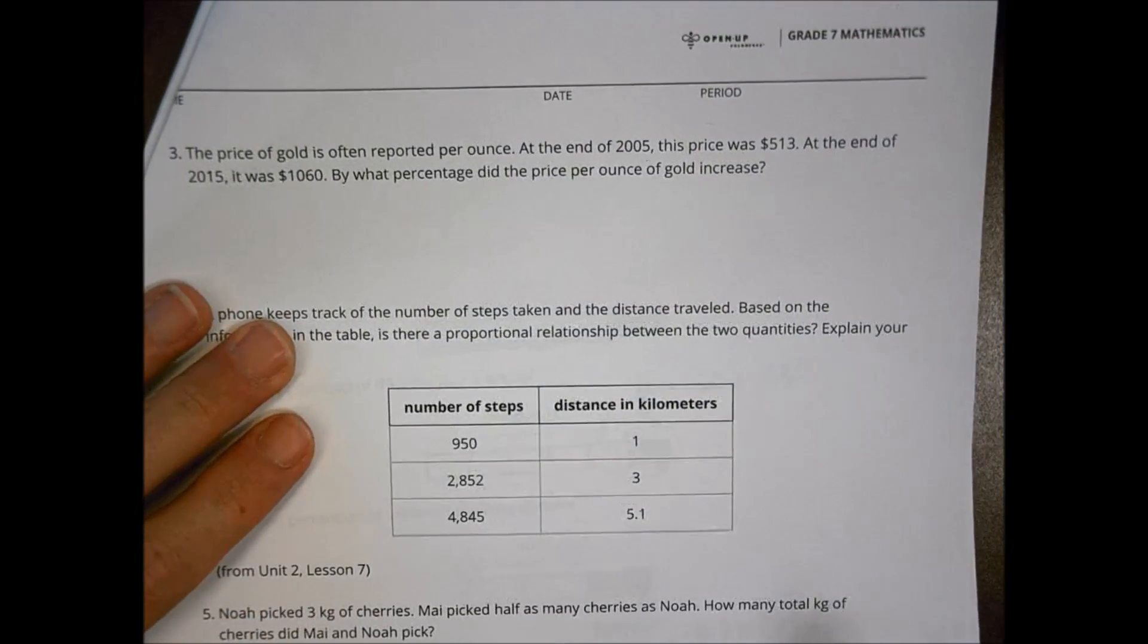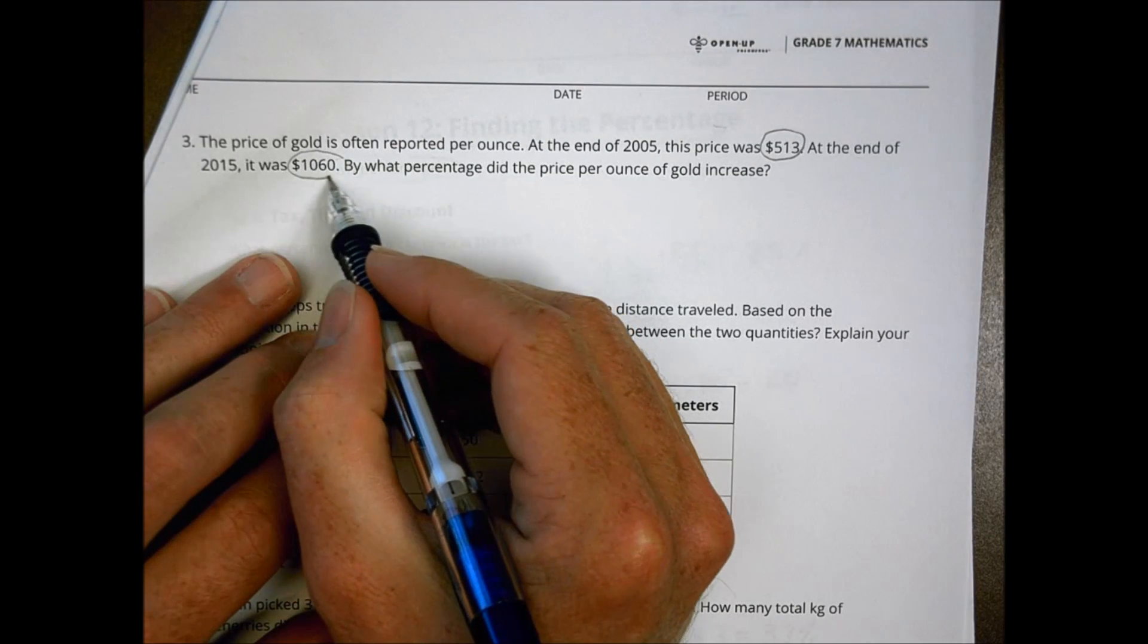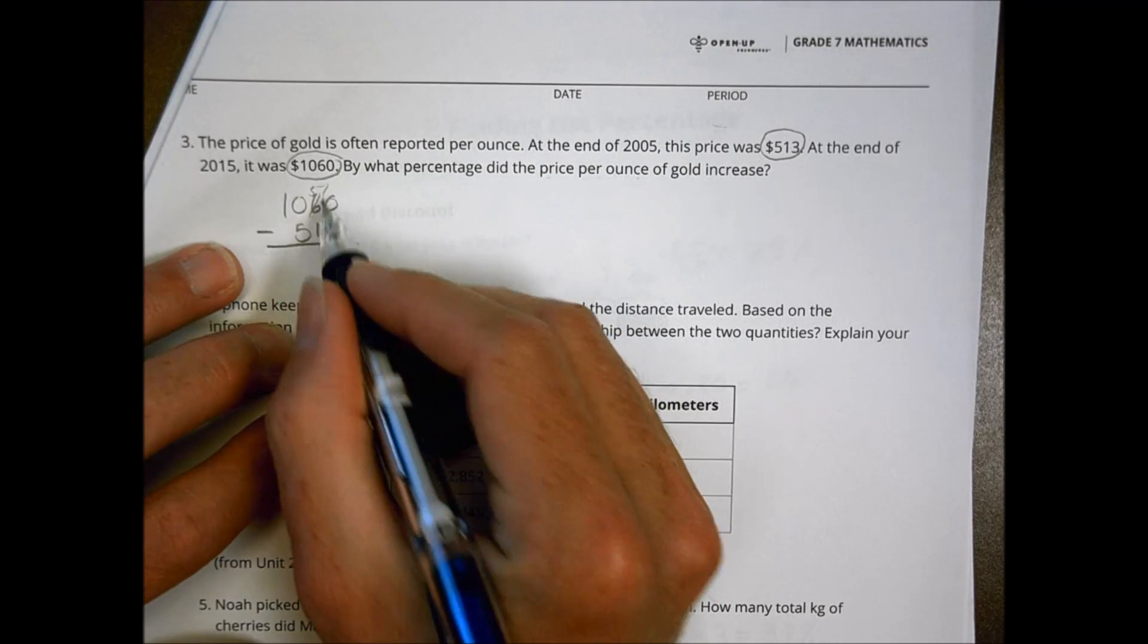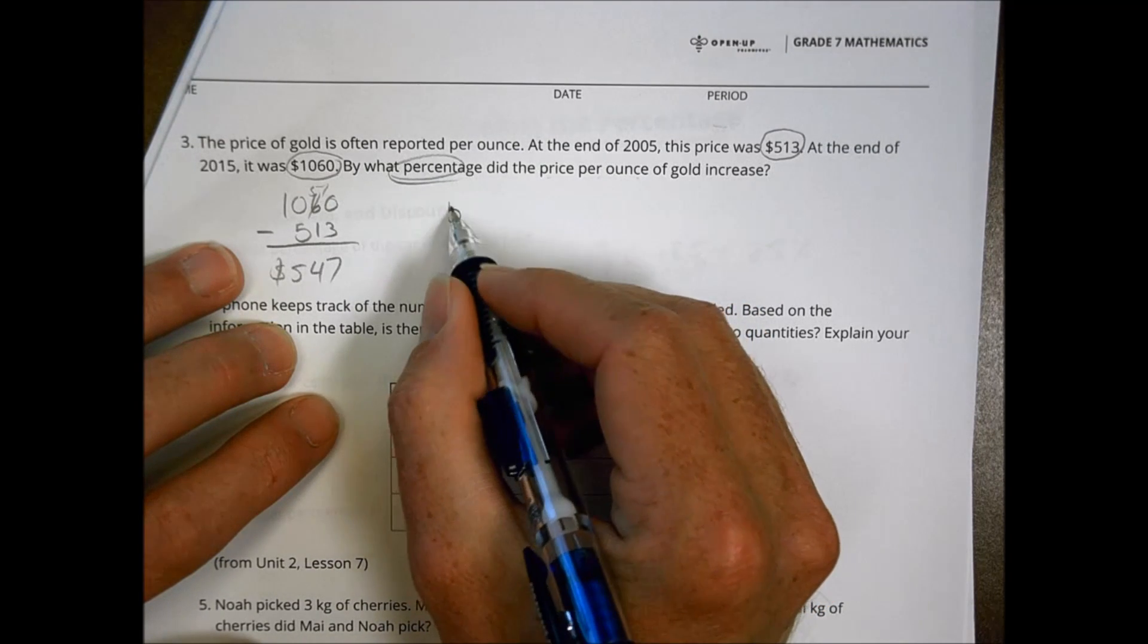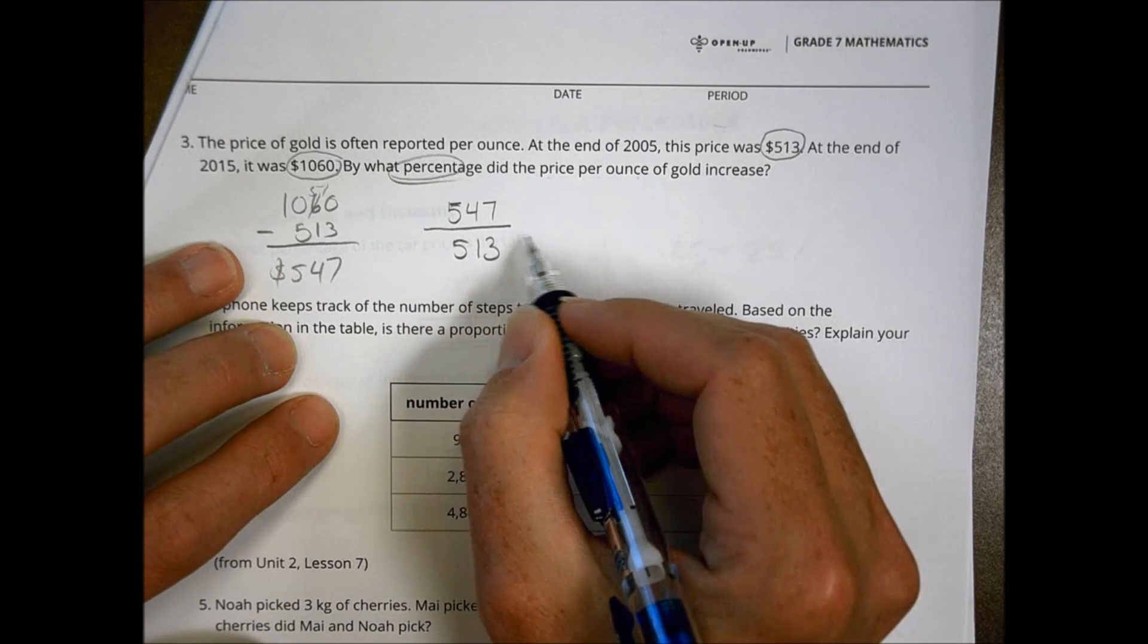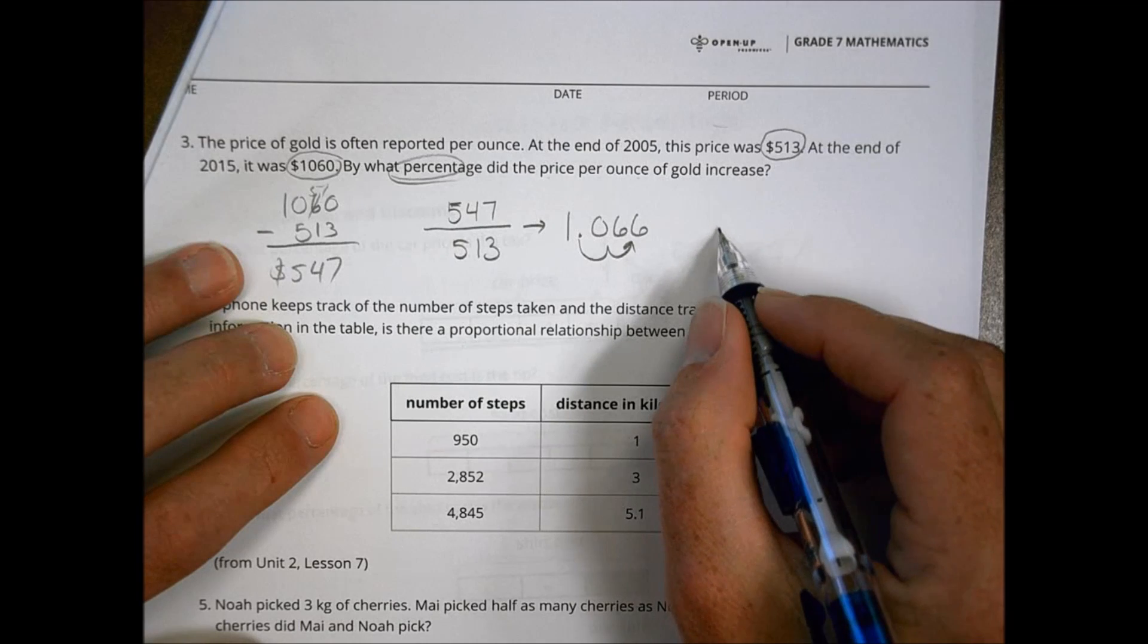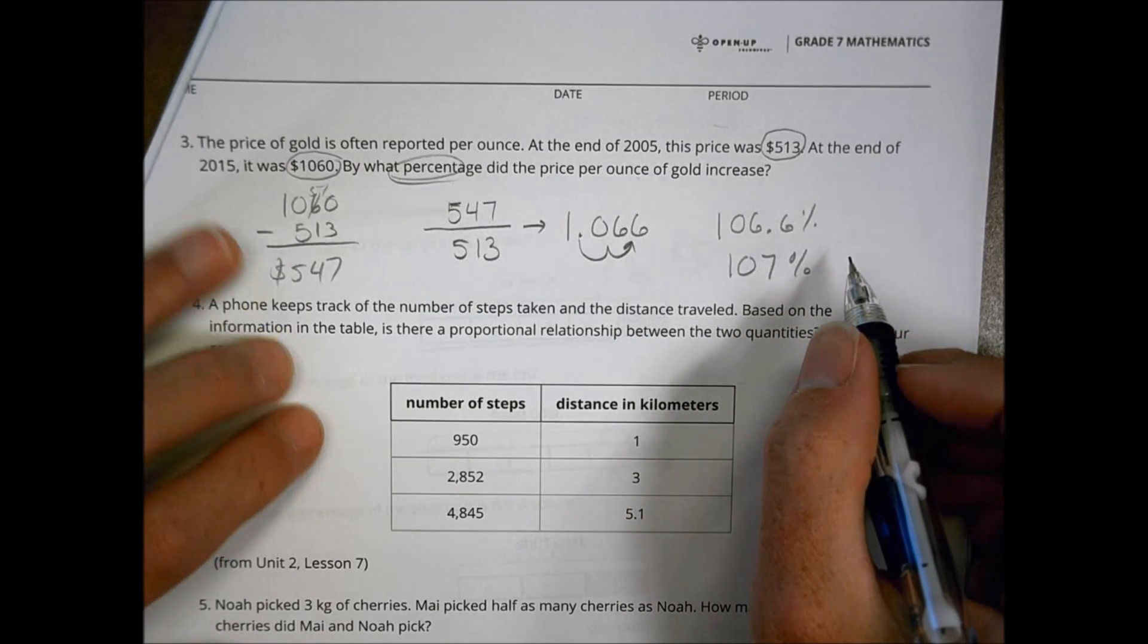It says the price of gold is often reported per ounce. At the end of 2005, the price was $513. At the end of 2015, 10 years later, it was $1,060. What percentage of the price per ounce of gold increase? So we need to see how much it did increase by, first of all. So our new amount minus our original amount tells us that this gold increased by $547. So the percent of increase is going to be how much did it increase over what it started with. So we went from 547 is our percentage of increase divided by our initial amount of 513. 547 divided by 513 is 1.066. Now that again, we could round that if we wanted to. We're going to move it over two dozen points to make it a percentage, which becomes either 106.6%. Or if I chose to round that I could say 107% was our percentage of price per ounce of gold increase.